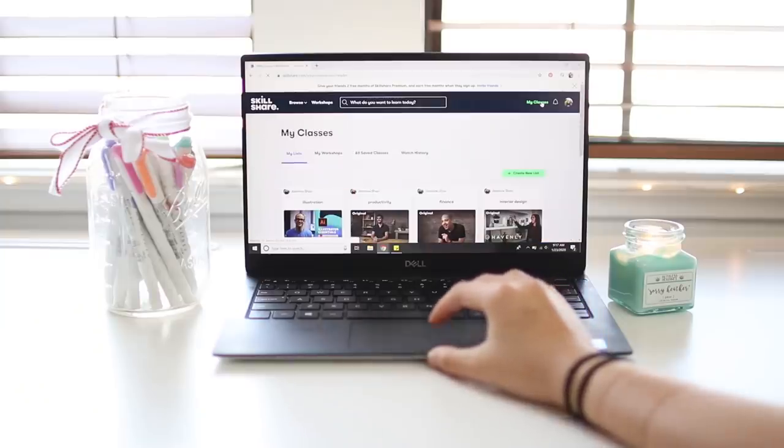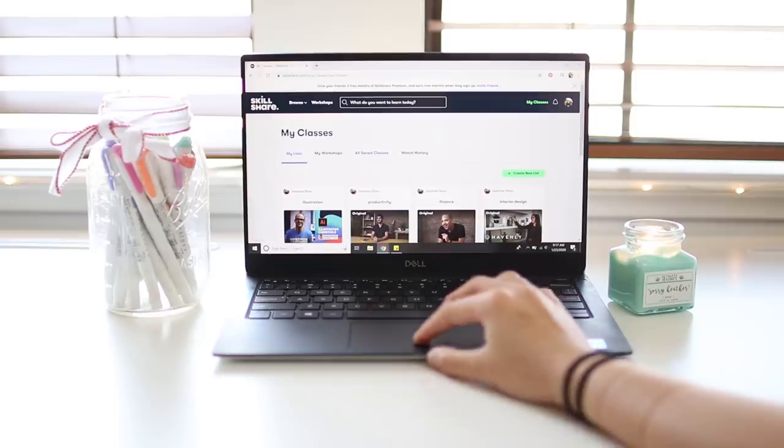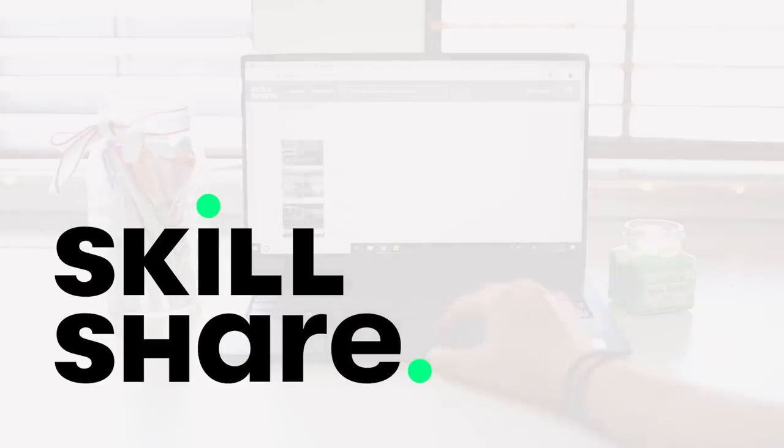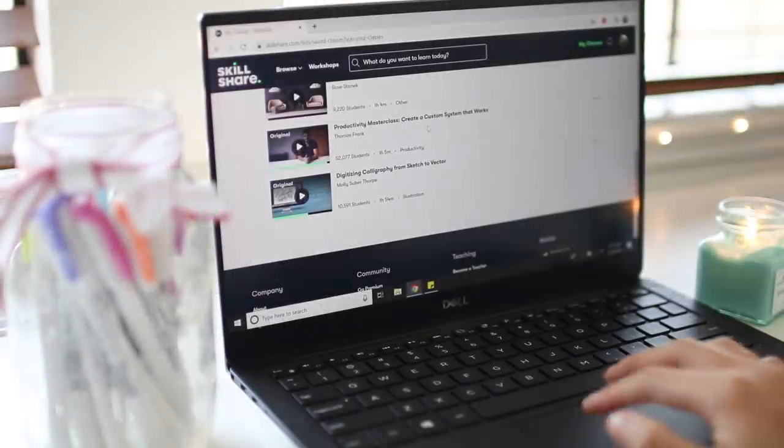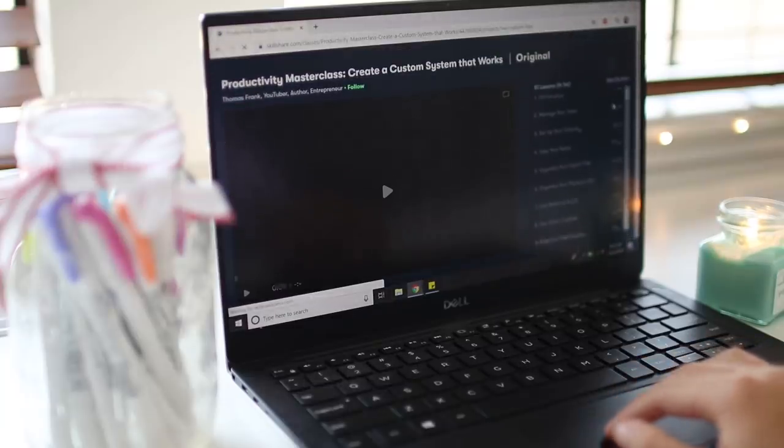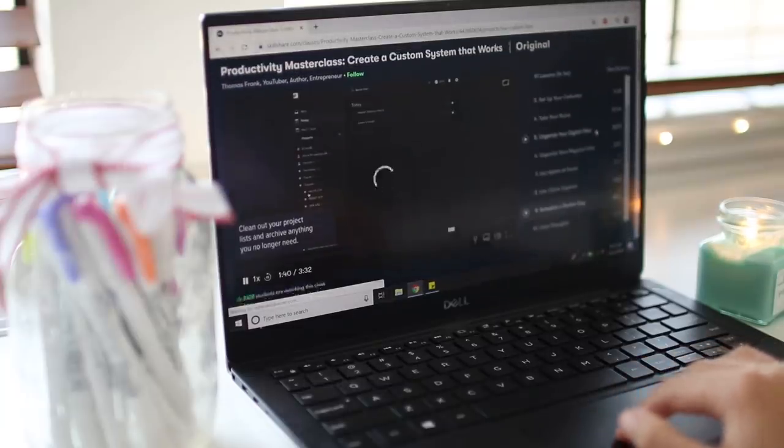Before moving on to my February setup, let's take a quick commercial break to shout out today's sponsor Skillshare. Lately I found Thomas Frank's Productivity Masterclass very informative. I enjoyed the advice about setting up a task list and calendar as it was really applicable to bullet journaling even though he's mostly focusing on digital to-do lists.